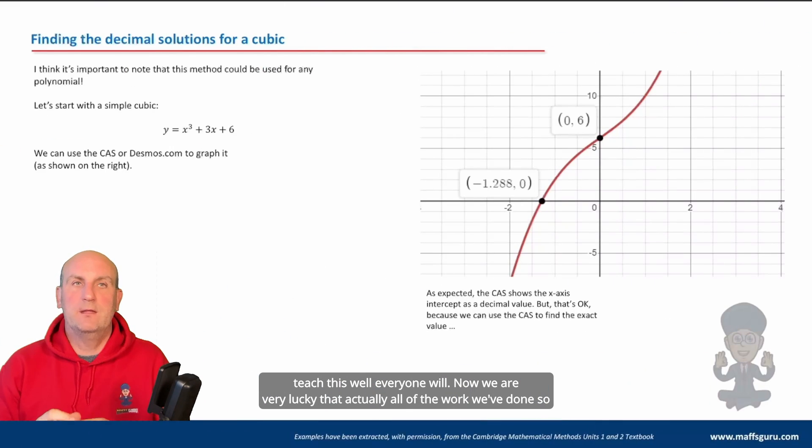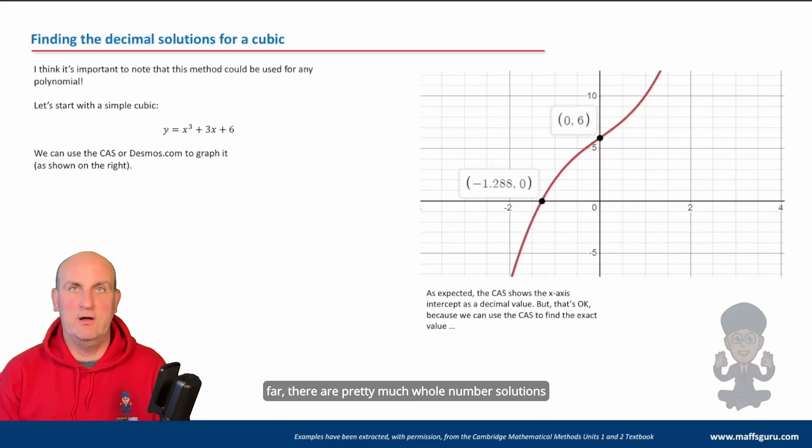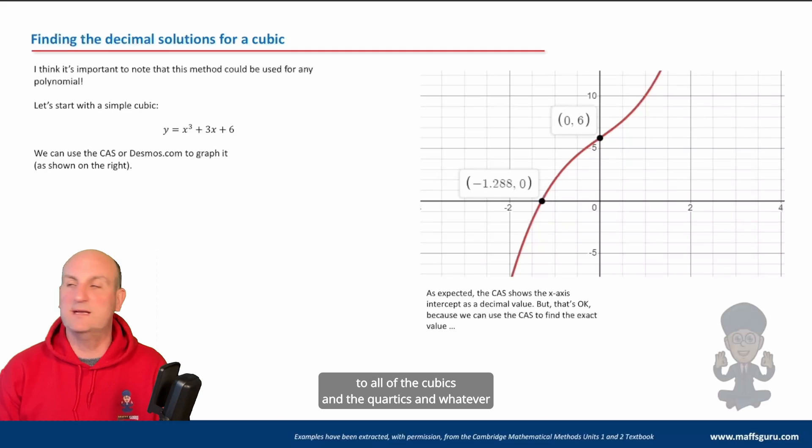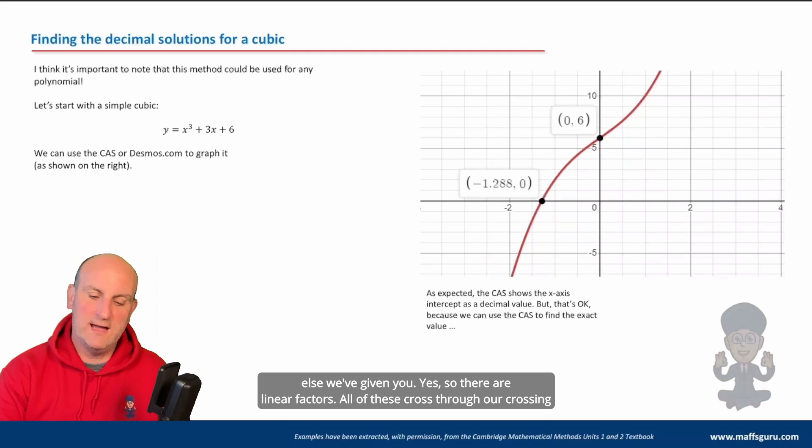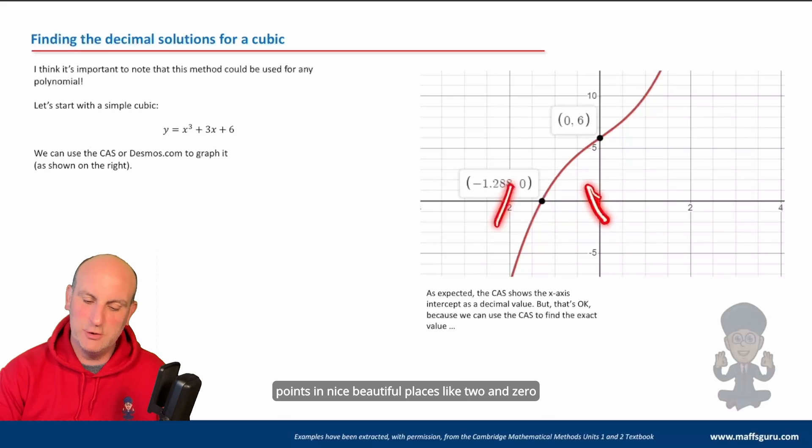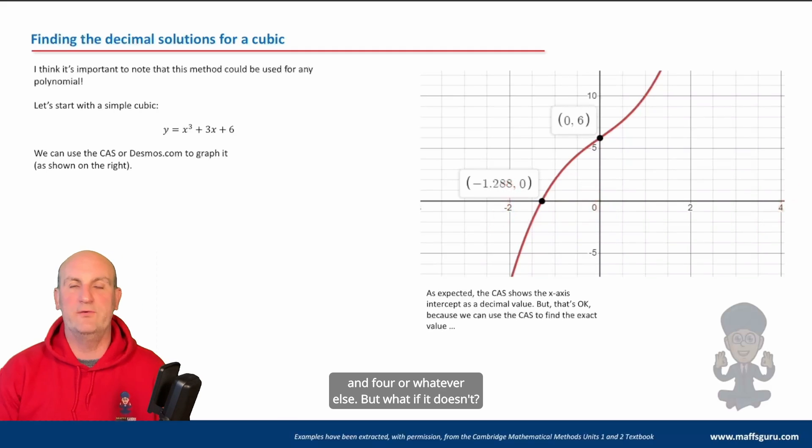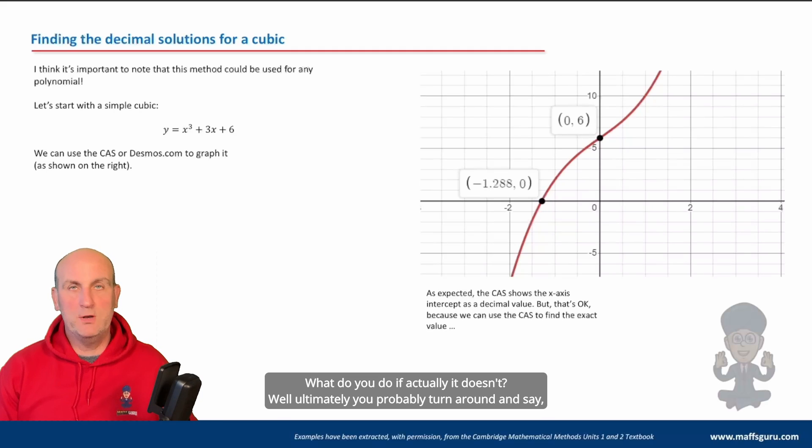Now, we are very lucky that actually all of the work we've done so far, there are pretty much whole number solutions to all of the cubics and the quartics and whatever else we've given you. So there are linear factors. All of these cross through our crossing points in those beautiful places like two and zero and four or whatever else. But what if it doesn't? What do you do if actually it doesn't?